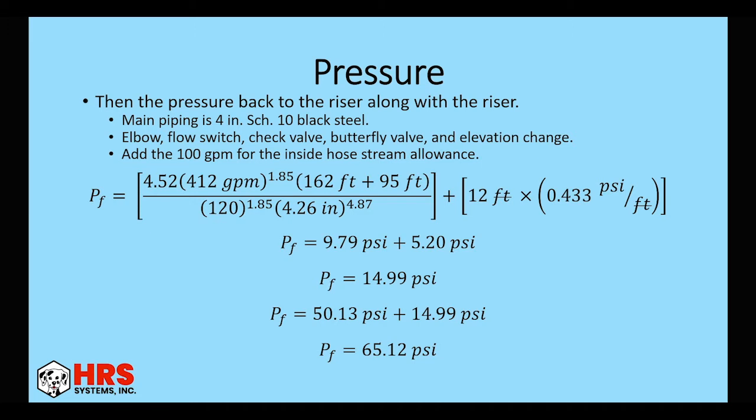Then we're going to take that, calculate it back to the bottom of the riser. So we have 412 because we included the inside hose. Our main we're going to say is 4-inch schedule 10 black steel. We also have an elbow, flow switch, check valve, butterfly valve, and elevation change all included in this one. So it's 412 times the 162. So that's the length of the main all the way back to the riser location. Plus the fittings and the change for elevation. We're at 12 feet, by the way. And then the internal diameter, 4.26. Then we add in the loss for elevation change. So our friction loss would be 9.79. Then our elevation change would be 5.2. So 14.9. So when we add that to our previous friction loss of 50.13 for a total of 65.12 at this point.